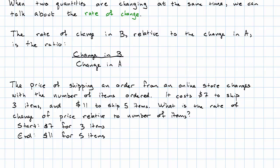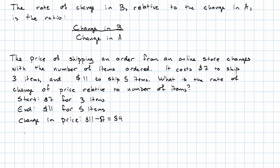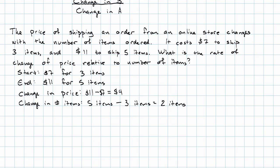So the change in price will be $11 minus $7, which is $4. The change in number of items is five items minus three items, which is two items. Now we write the ratio as $4, the change in price, over two items, the change in the number of items, so that's $2 per item.